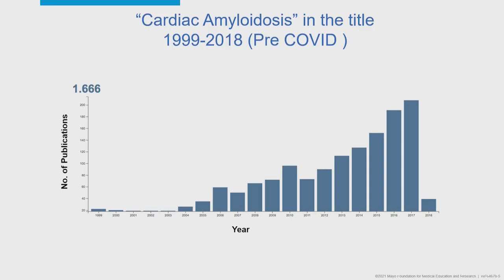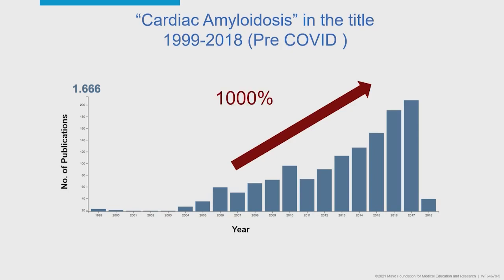In the pre-COVID world, there was a dramatic increase in interest and publication in amyloid patients — really like a thousand-fold increase in publications over the previous 15 years. That was blunted a little bit last year, but I think we'll see COVID get settled down and more normal publications in the next few years.